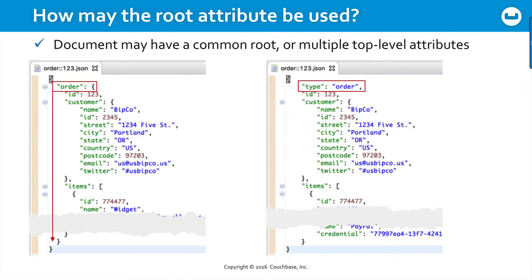This convention has been widely used in some circles as a way to indicate the document type. By contrast, on the right, order123 is still just a single object, but it has a whole series of top-level attributes within it. Consider the complexity of introspecting through an additional level of nesting on every single query if you take the left approach, versus the relative simplicity of interacting with all attributes on the right. We'll come back to this in a later lesson.